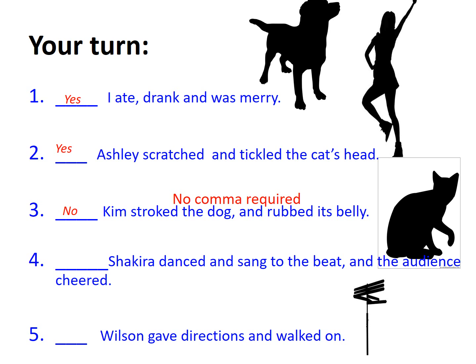'Shakira danced and sang to the beat, and the audience cheered.' Shakira danced and sang — two verbs that have not been split up because they are describing what she is doing. We also learn what the audience did: they cheered. It makes sense that this is split up with a comma because we are learning what Shakira did and what the audience did, but we're not splitting up the two verbs related to Shakira because that would be wrong.